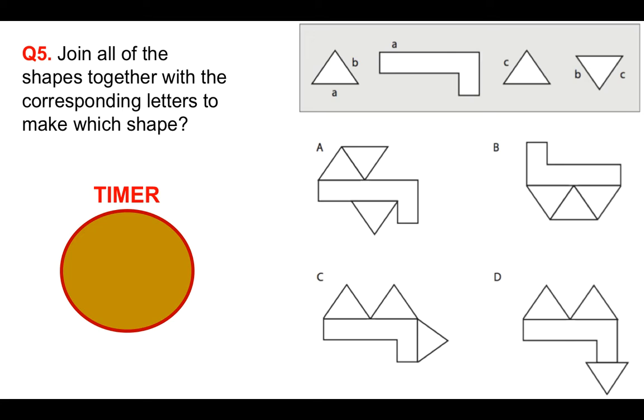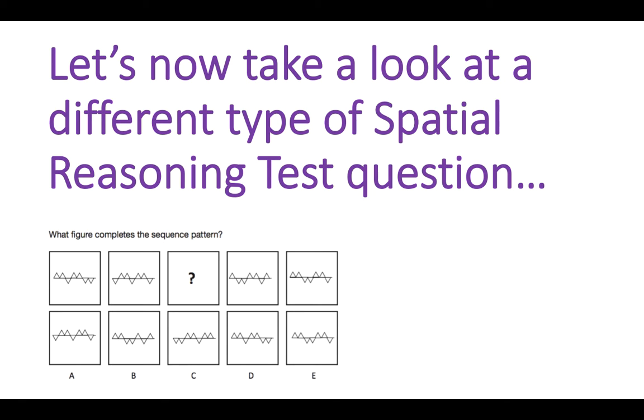Question number five. Join all of the shapes together again to come up with which one. This is the final one. So don't forget to put your answer in the comment section below, please. So well done. Hopefully you didn't find those too difficult. You can revisit this if you need to. So let's take a look at a different type of spatial reasoning test question because they come in many different formats.